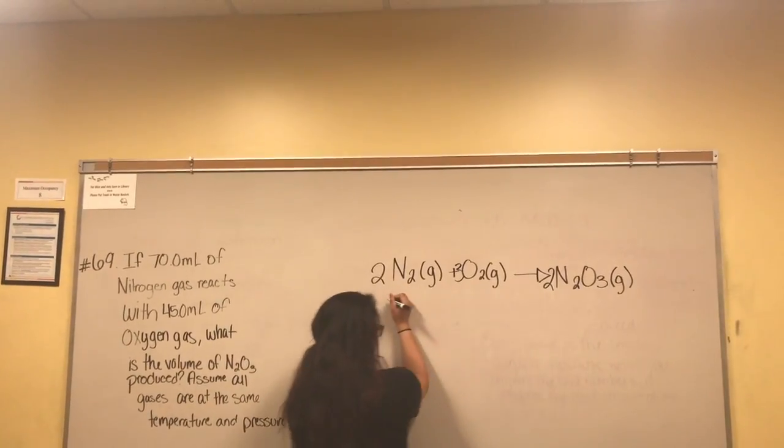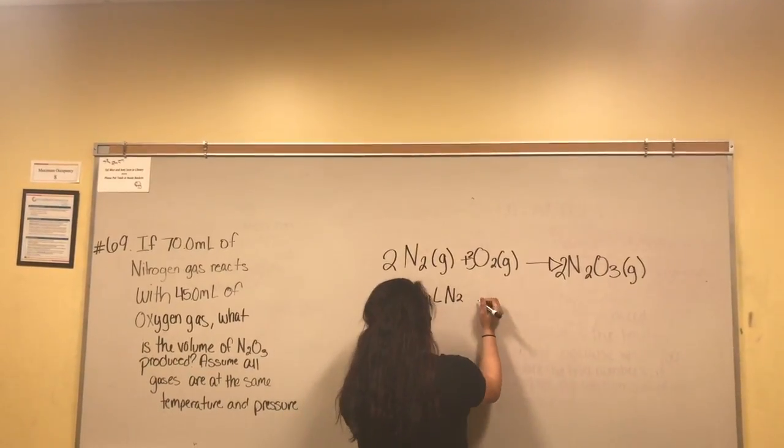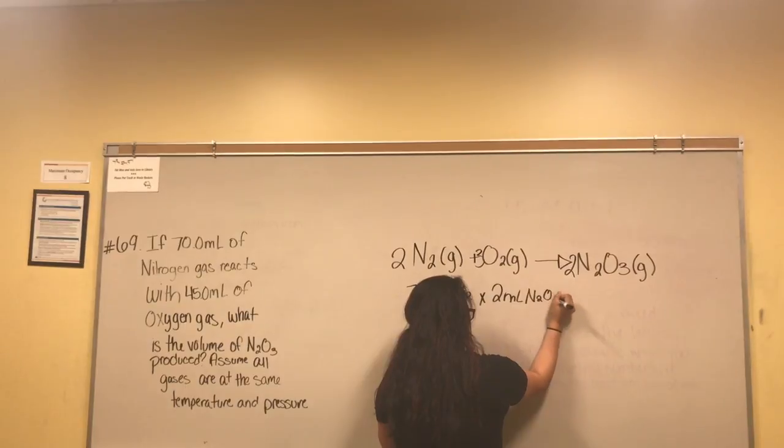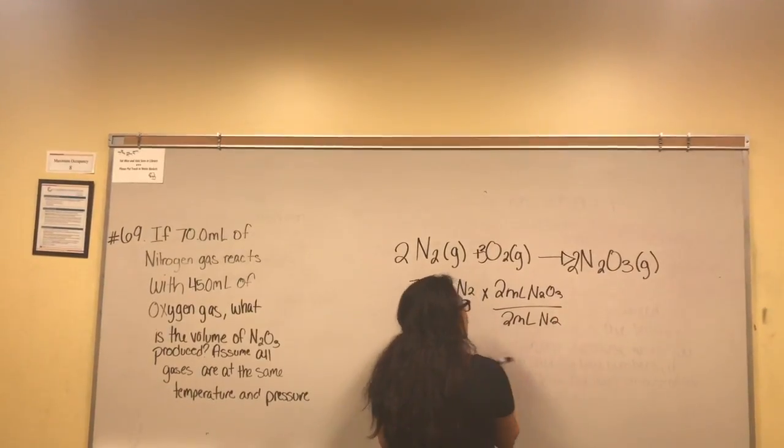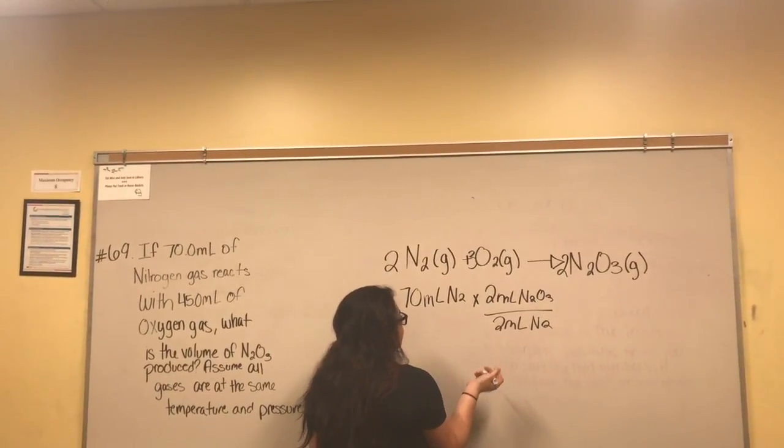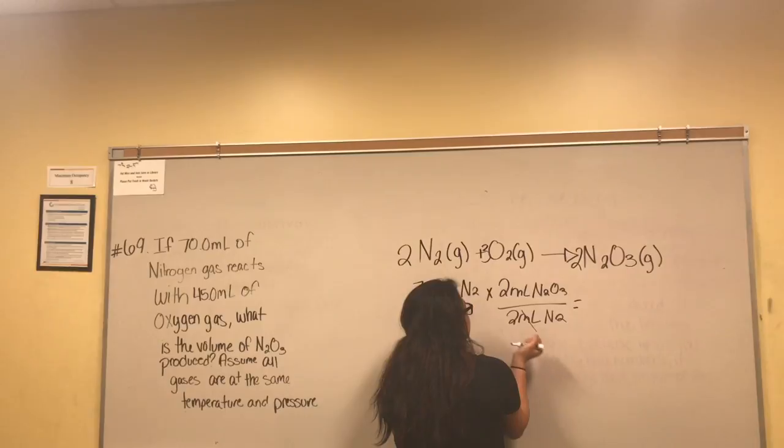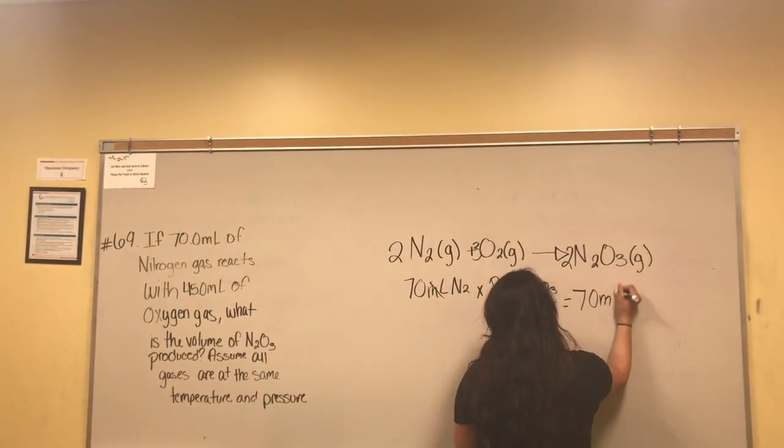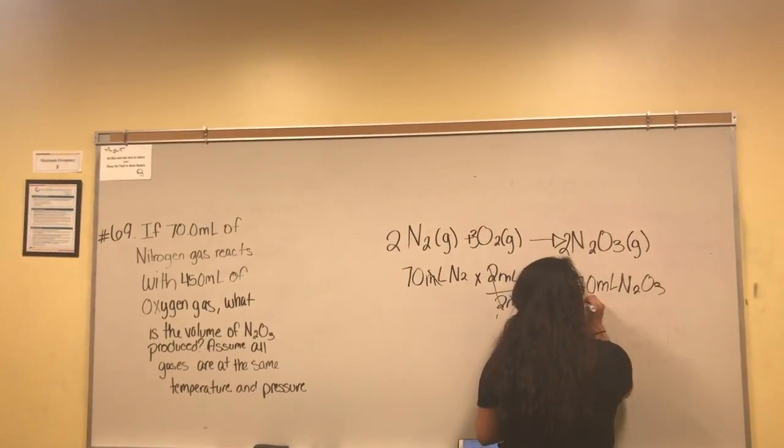Your given is 70 milliliters of N2. Then you do the molar ratio, which is two milliliters of N2O3 over two milliliters of N2. You don't need much conversion since it's already in milliliters and you're finding the milliliters of N2O3. Cancel these out. Two divided by two is one, so you have 70 milliliters of N2O3. That's your answer for that part.